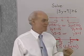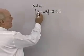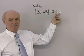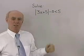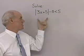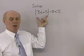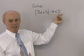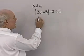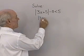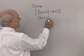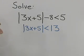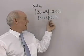Let's look at another problem. In this case, we want to solve the absolute value of 3x plus 5, minus 8, less than 5. I want to do the same kind of reasoning as before, but first I need to isolate the absolute value symbol by itself on the left side. So I'll add 8 to both sides, giving me the absolute value of 3x plus 5 is less than 13.